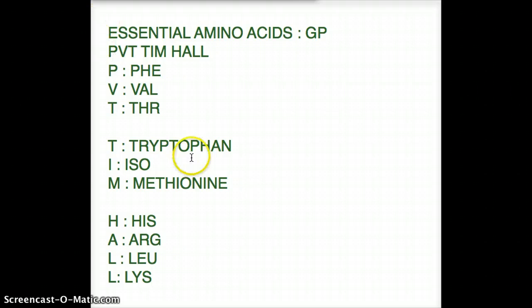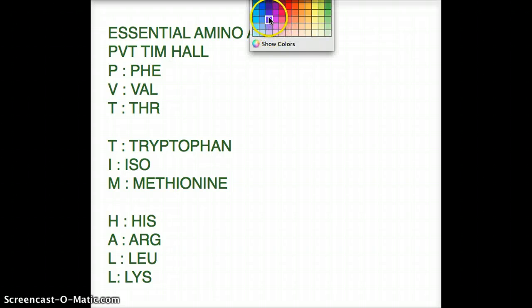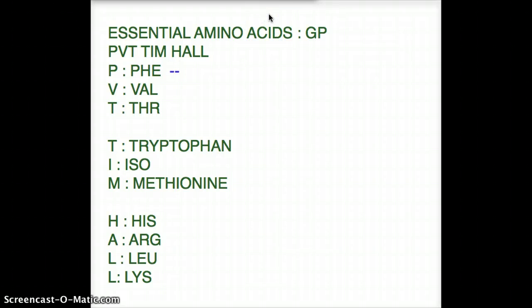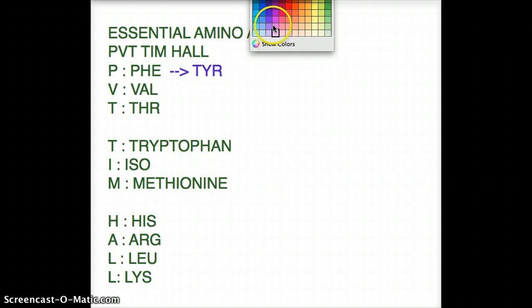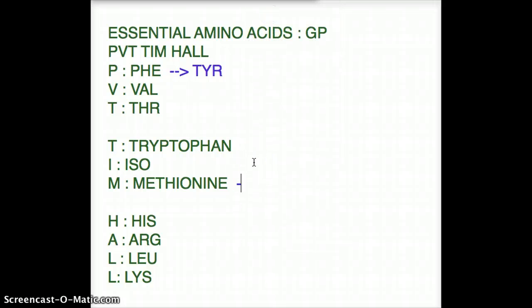Now if you have a deficiency of phenylalanine, then tyrosine is going to be essential. If there is a deficiency of methionine, then your essential amino acid is going to be cysteine.